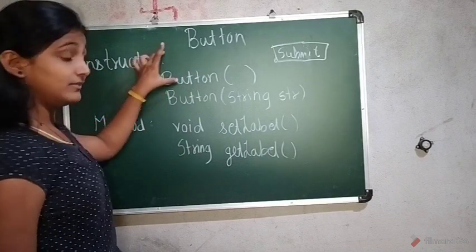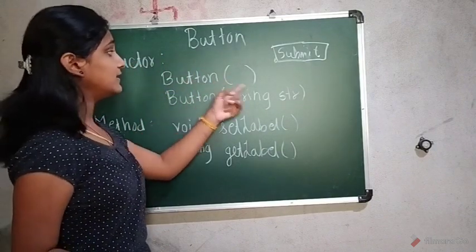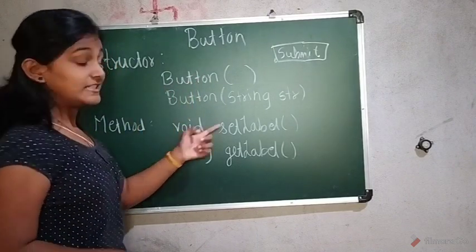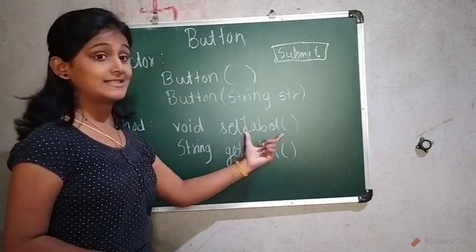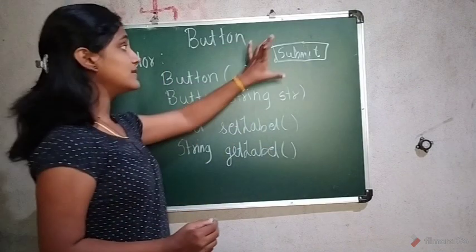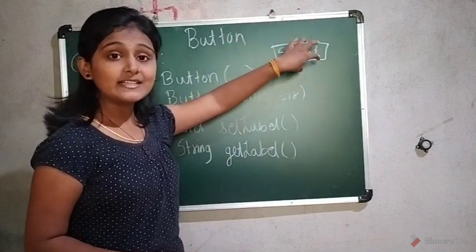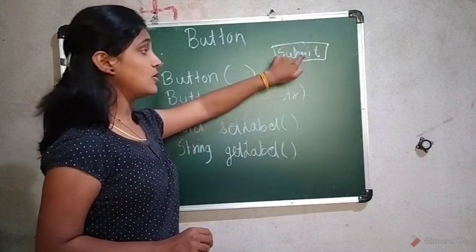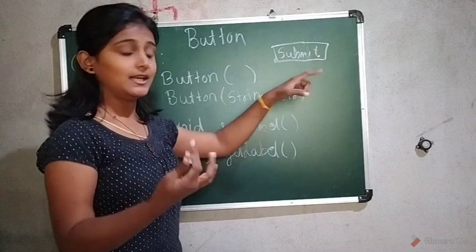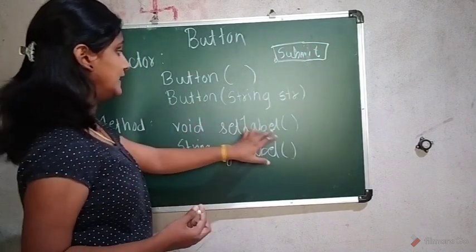Now moving towards the method. Now here I have not passed anything. Nothing is passed here. So instead of that I can use a method. SetLabel. SetLabel is the method. That means button contains itself a label. It contains the label. And when user presses on this component on the button, it generates the event.